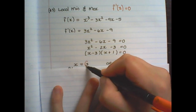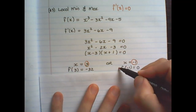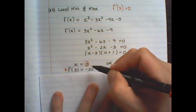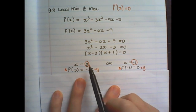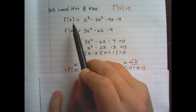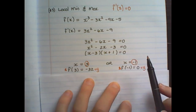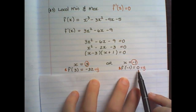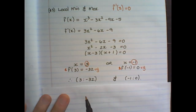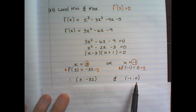We substitute these x-values into the original function to find the y-coordinates. Substituting x = 3 gives y = −32, and substituting x = −1 gives y = 0. Therefore the two stationary point coordinates are (3, −32) and (−1, 0).